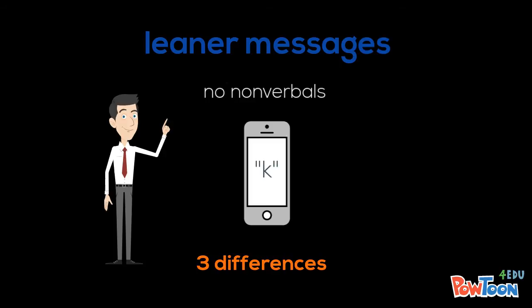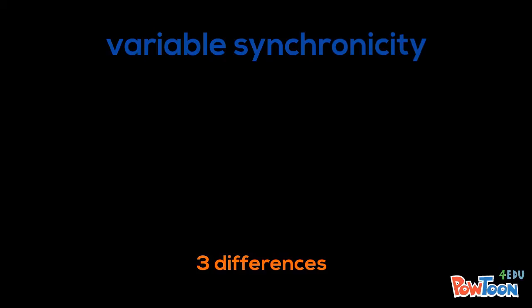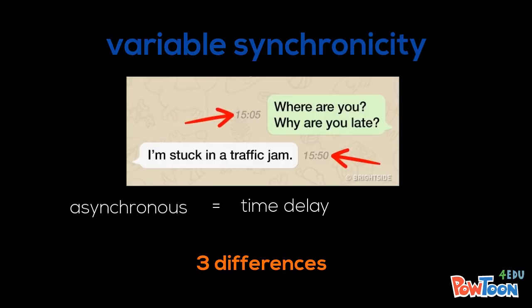Non-verbal cues help to clarify meanings and feelings. Mediated communication also has variable synchronicity. Conversations can be synchronous or asynchronous. In synchronous conversations, the communicators are connected in real time, like talking on the phone or video conferencing. In asynchronous conversations, there is a time delay between messages, such as when texting or emailing. One message is sent at a time and the receiver may respond within seconds, hours, or even days.